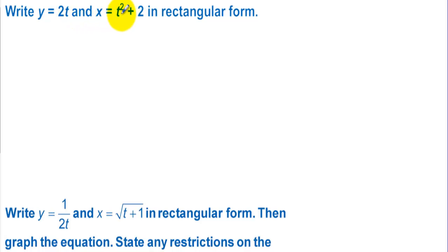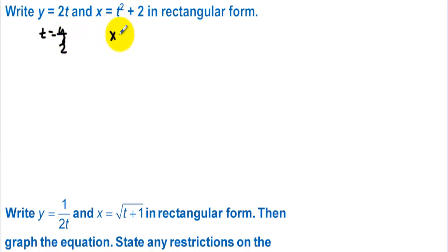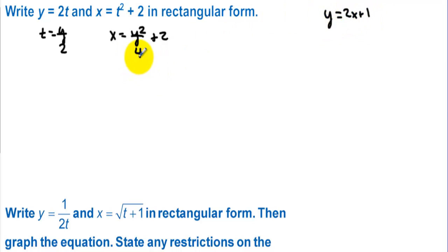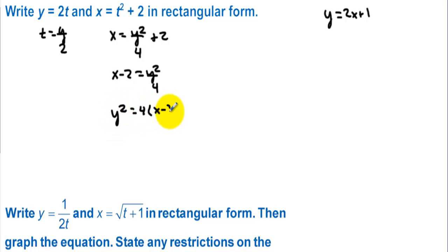Write y = 2t and x = t² + 2 in rectangular form. I'm going to get t by itself in the linear equation and not the squared one. So t = y/2, and then we plug y/2 in for t: x = y²/4 + 2. Now we need to get y by itself for rectangular form. Subtract 2: x minus 2 = y²/4. Multiply by 4: y² = 4(x - 2). Take the square root: y = the square root of 4(x - 2), which we could write as 2 times the square root of x - 2.